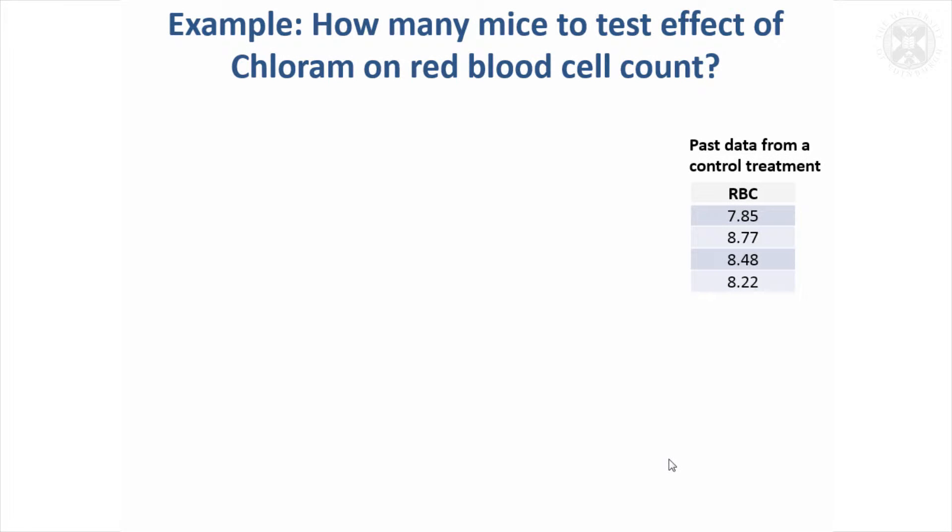I'll look at an example of setting up a new experiment for that design we were looking at in the last session, thinking about how many mice we need to test the effect of an intervention, chlorum, on red blood cell counts.